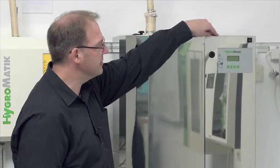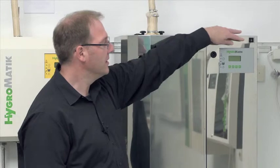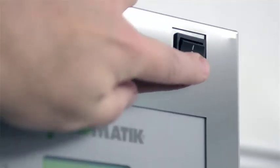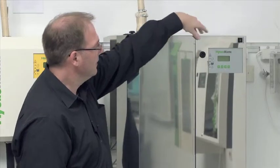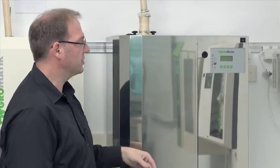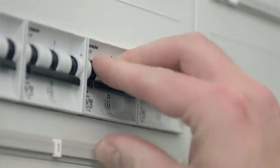Before I begin with the actual maintenance of the unit I first need to make sure that the water is drained from the steam cylinder. To do so I press and hold the control switch in position 2. After the water is now out of the steam cylinder I disconnect the unit from the power supply and secure it against being restarted.